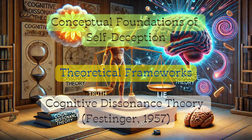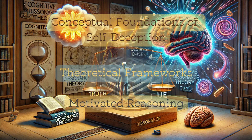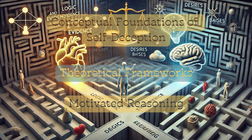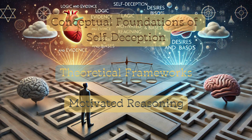Two key theoretical frameworks underpin self-deception. Cognitive Dissonance Theory (Festinger, 1957) suggests that individuals deceive themselves to reduce the discomfort of conflicting beliefs. Motivated Reasoning highlights how desires and motivations influence cognitive processes, leading to biased interpretations of reality.